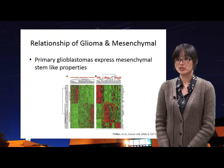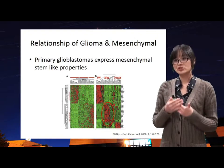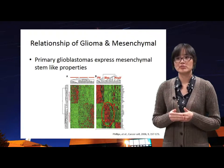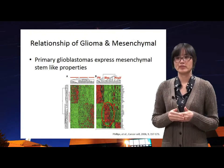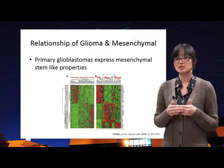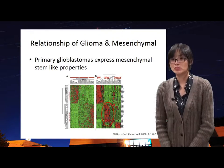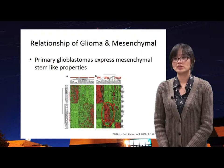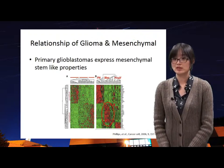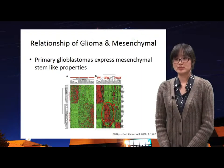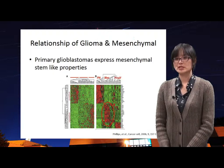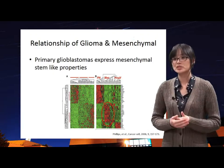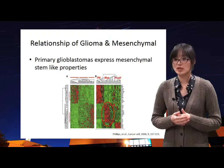Glioblastoma is originated from neuroepithelial cells. Neuroepithelial cells are originated from the ectoderm, whereas mesenchymal stem cells are derived from the mesoderm. Some papers show that the protein expression of glioblastoma is very similar to the pattern of all protein expression of mesenchymal stem cells.